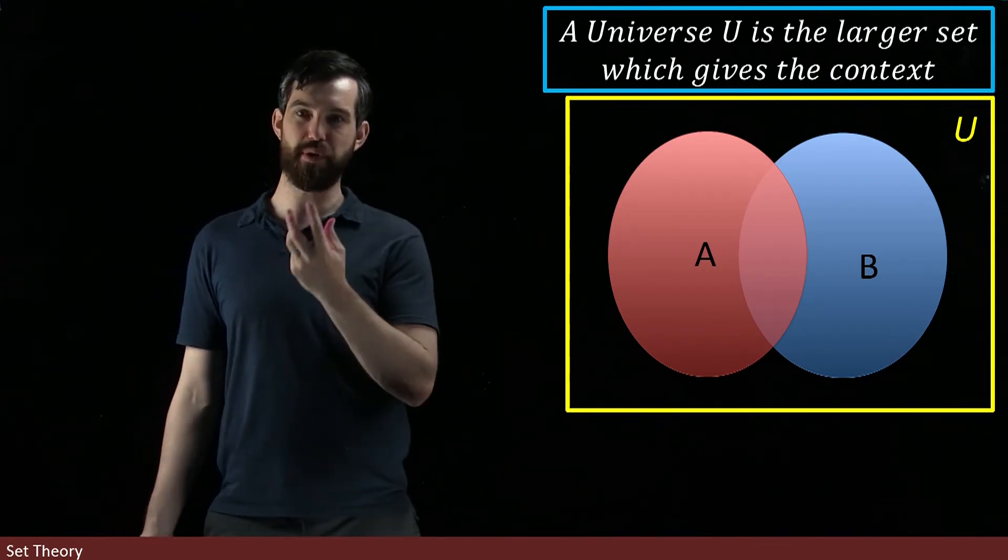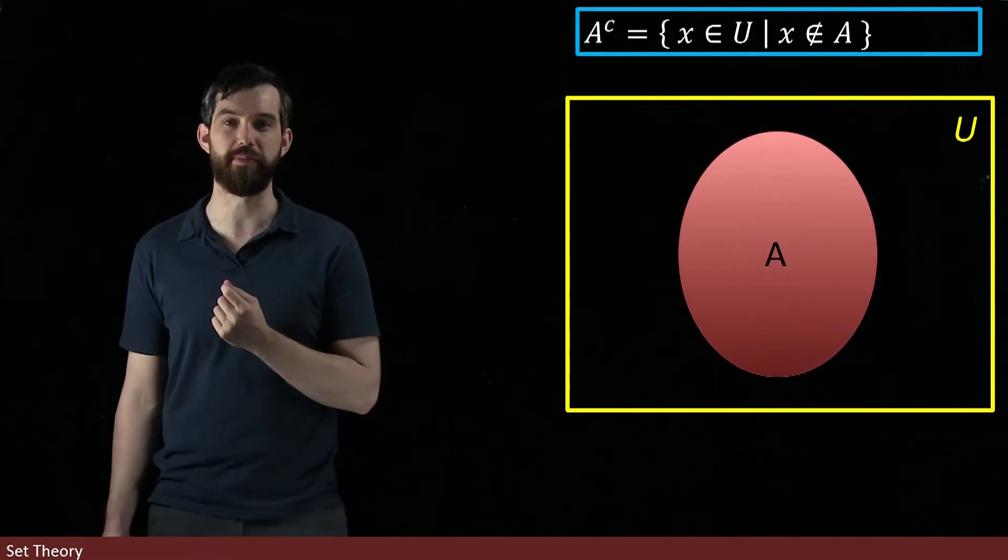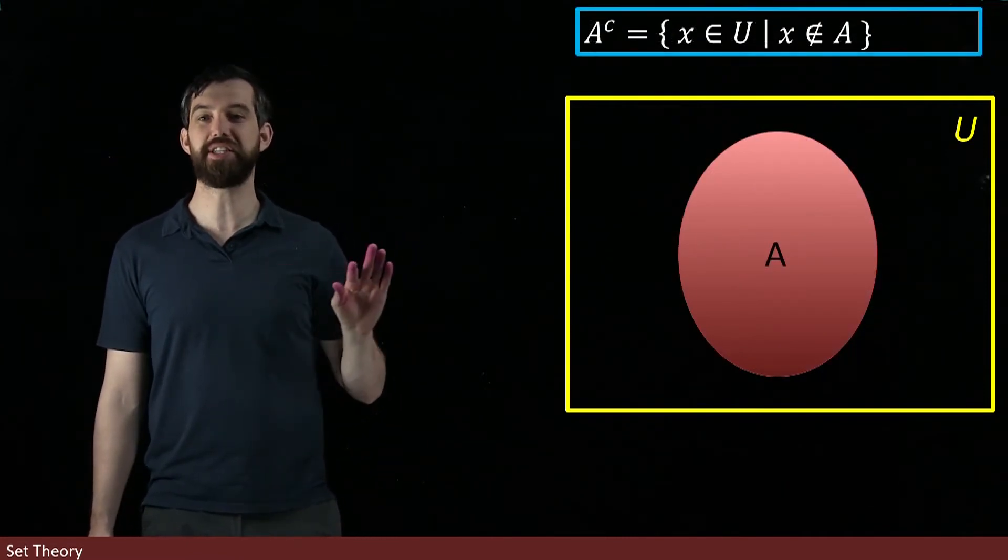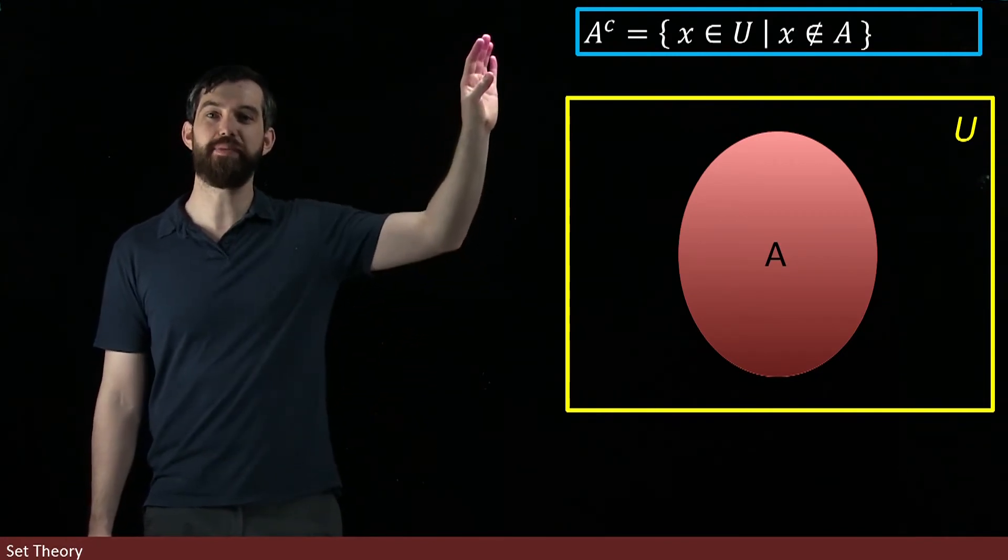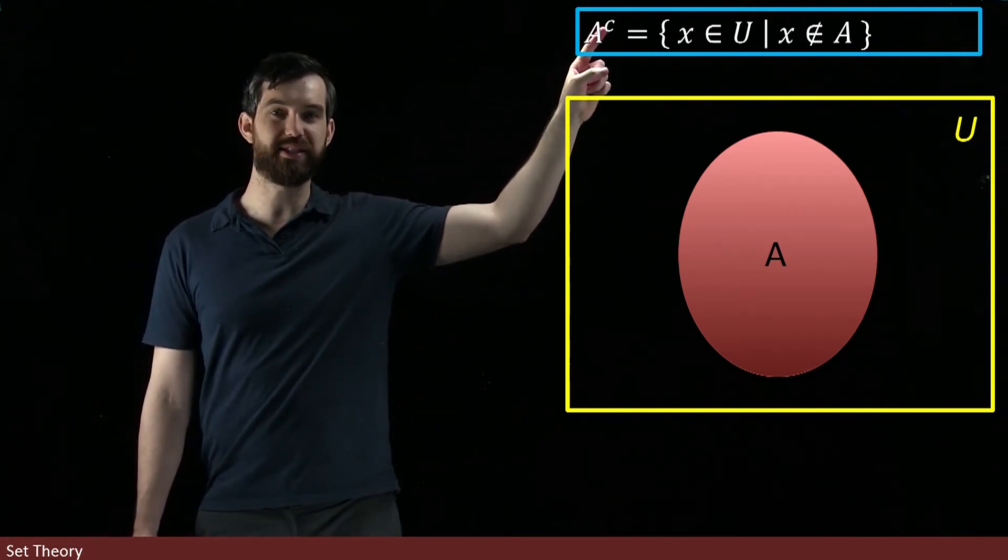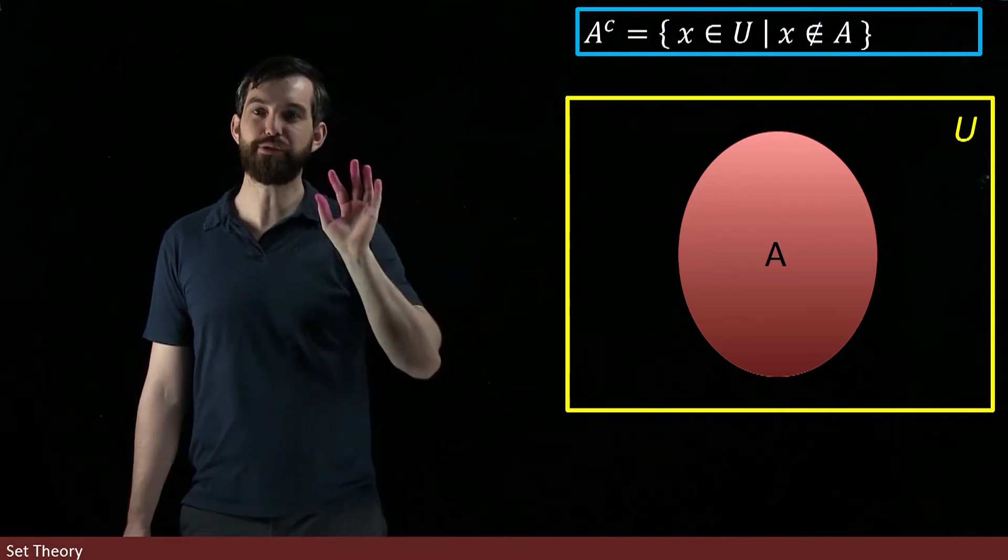And then we can do an operation if we know what the universal set's gonna be. So for example, let me just take one set A and it's living inside of the universal set. I can define something where I said A, notice I put a little C up here. This stands for complement.